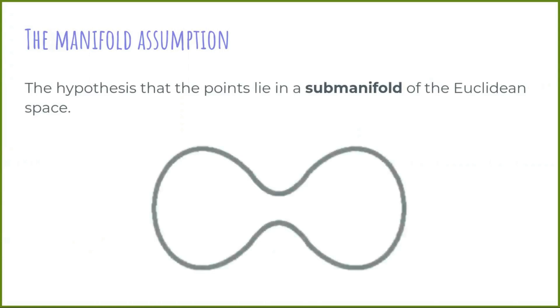In the previous cases, we were under the so-called manifold assumption. That is, the hypothesis that the points lay in a sub-manifold of the Euclidean space. In that situation, Euclidean distance is not in general a good global estimator of the geodesic distance.